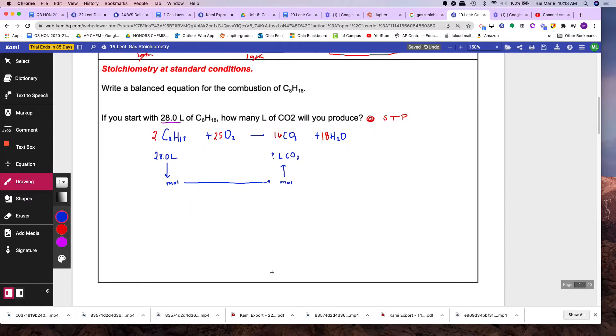So, you can do that. You can use PV equals NRT here, you can use PV equals NRT here, but I have a shortcut for you. The shortcut happens when you're at STP.